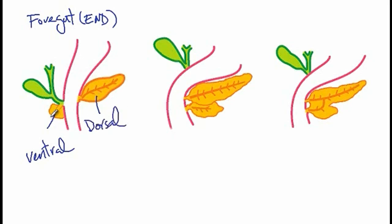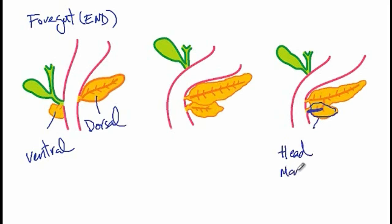During embryonic development, the ventral pancreatic bud rotates and goes to the other side, fusing with the dorsal bud to form the pancreas. As you can see, the ventral bud contributes to the head of the pancreas, the main pancreatic duct, as well as the uncinate process.